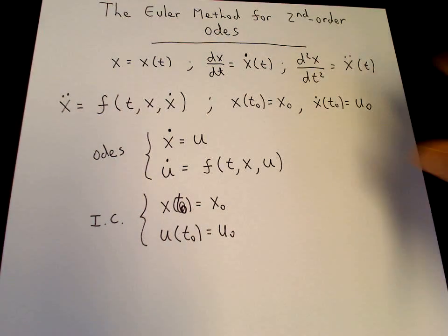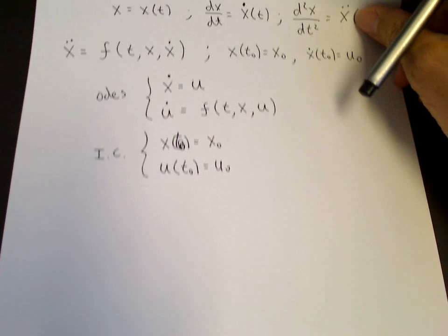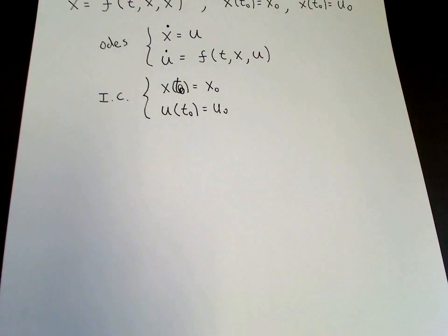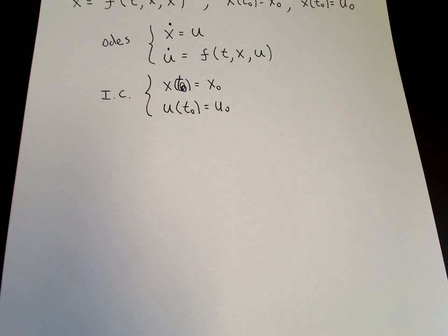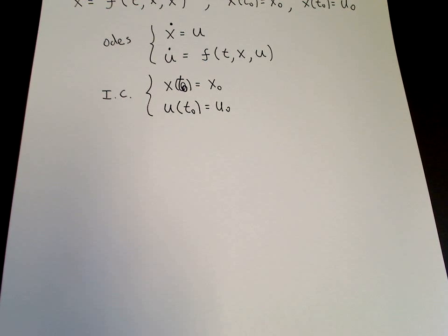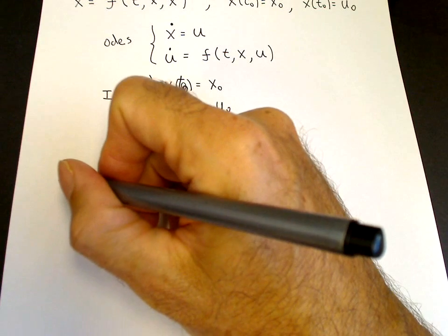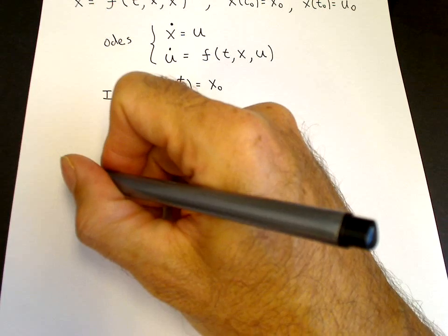So the Euler method then tries to solve these two ODEs simultaneously. We can show how that works by two graphs.